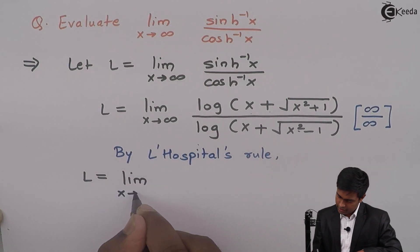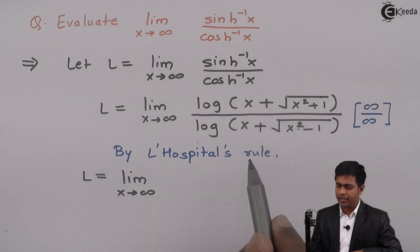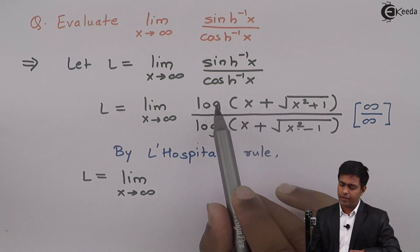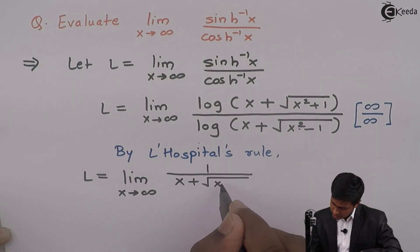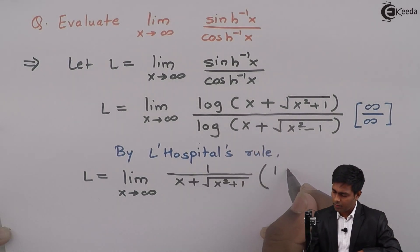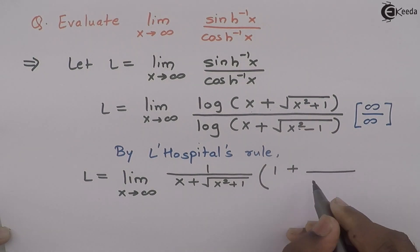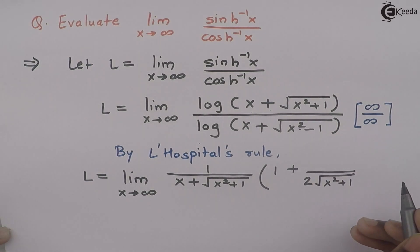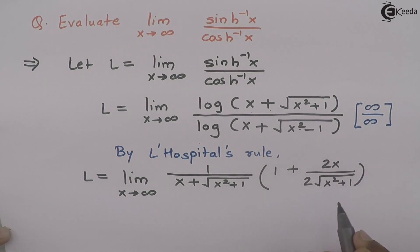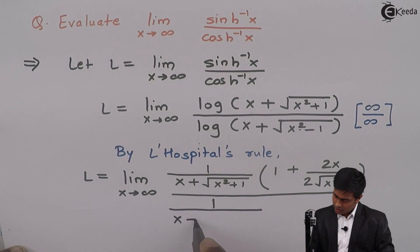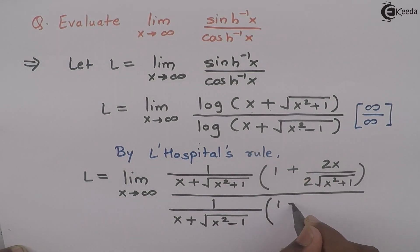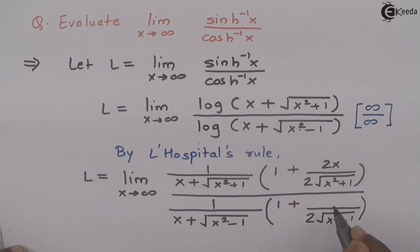By L'Hôpital's rule we get L as limit x tends to infinity. We find the derivative of the numerator and derivative of the denominator. The derivative of the numerator is 1 upon x plus square root of x squared plus 1, multiplied by the derivative which is 1 plus 2x upon 2 root of x squared plus 1. Similarly, the derivative of the denominator is 1 upon x plus square root of x squared minus 1, multiplied by 1 plus 2x upon 2 root of x squared minus 1 in the numerator.